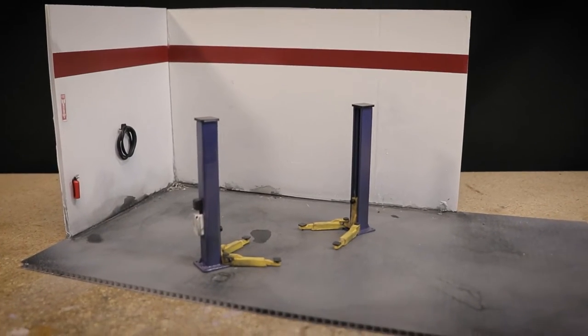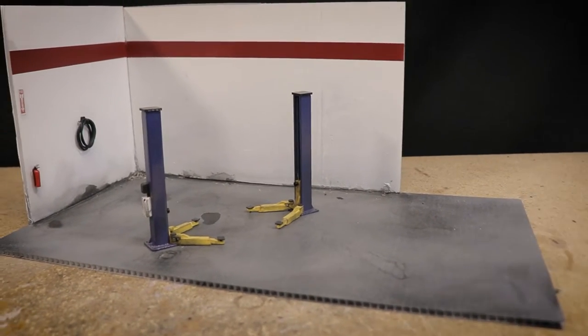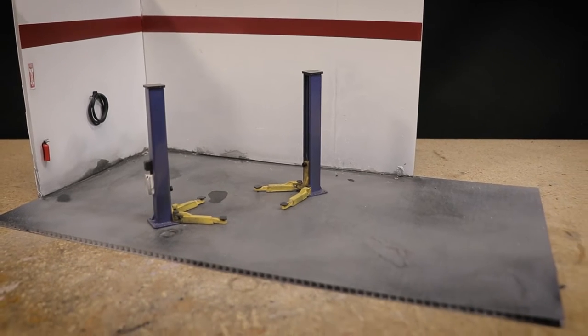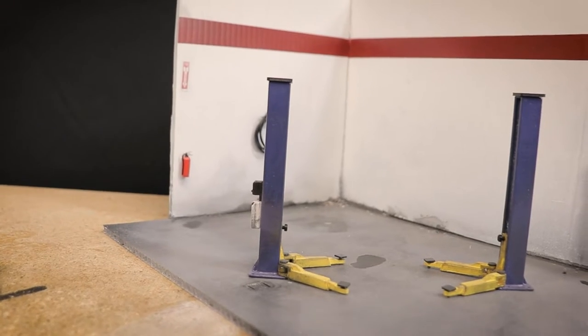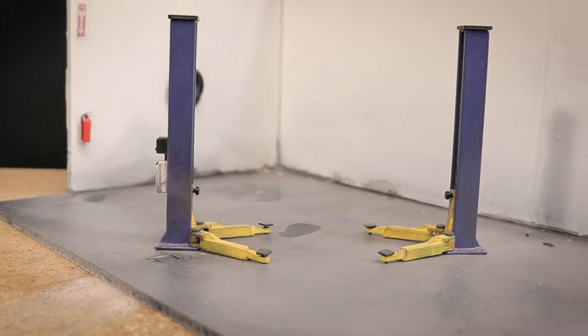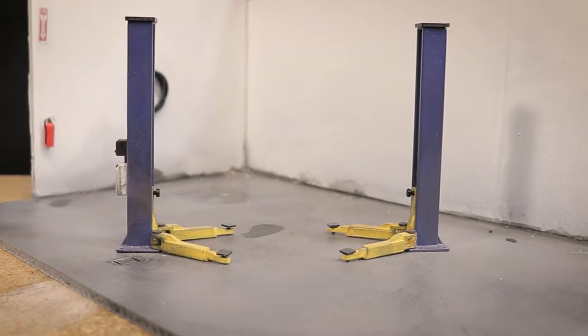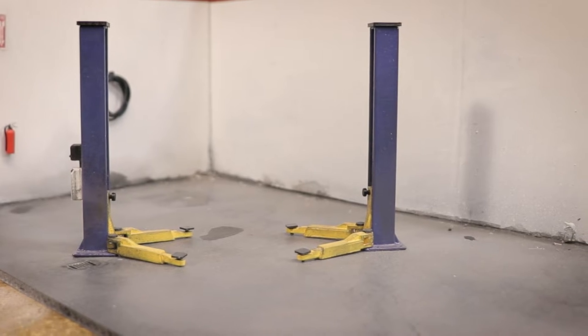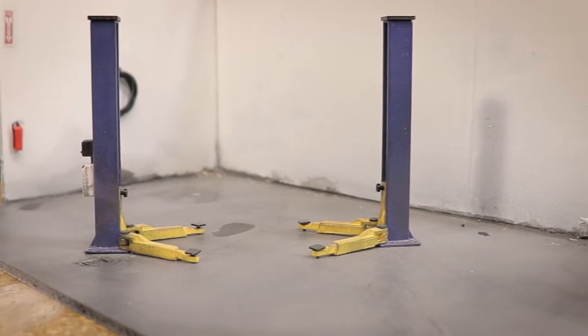As you can see, I've already added a two-post lift, fire extinguisher, and hose. Now the lift and the extinguisher can be ordered from our shop, along with many other items you'll see throughout this video. STL files for many of these items can also be found on Patreon for you to 3D print at home. The links are below in the description.